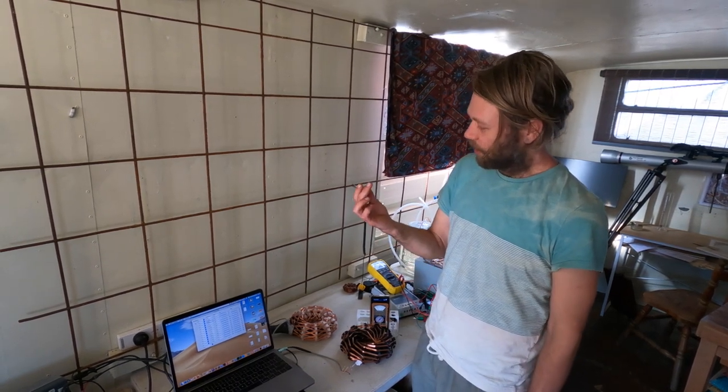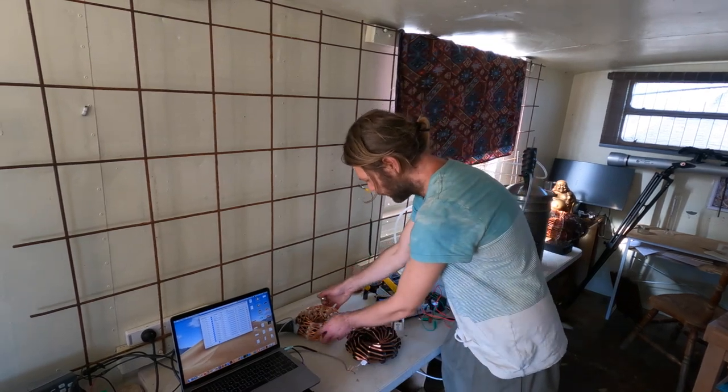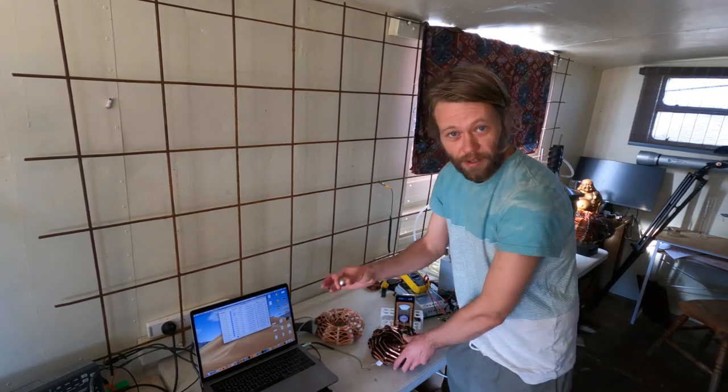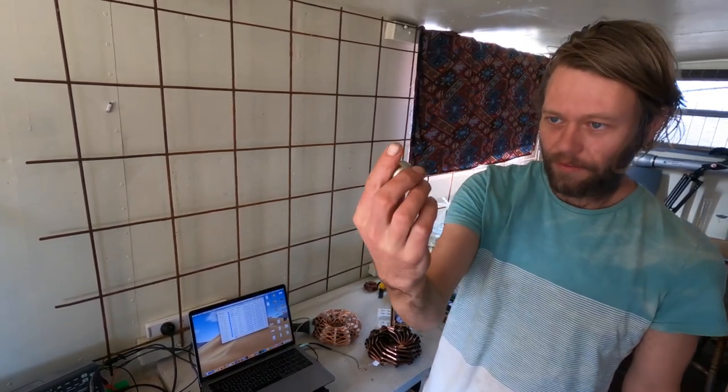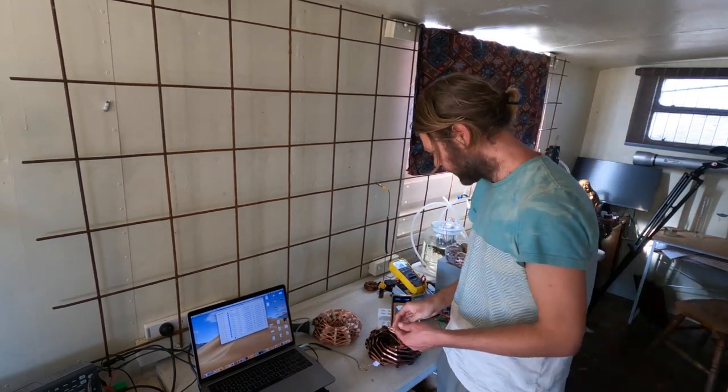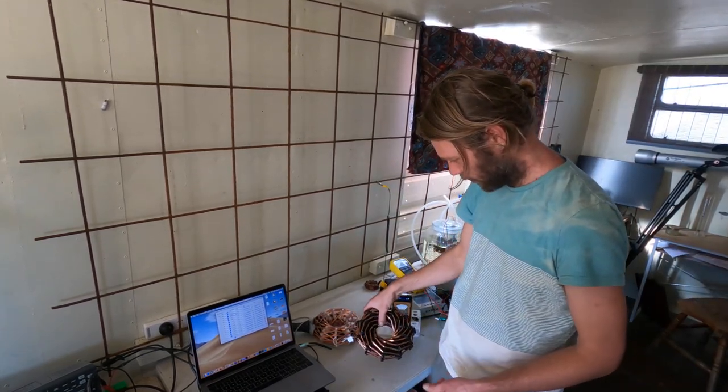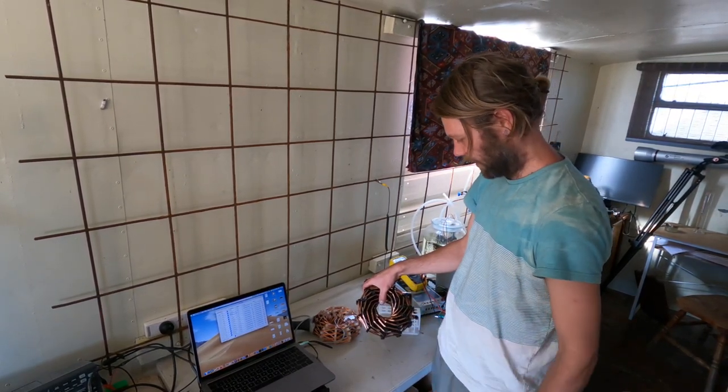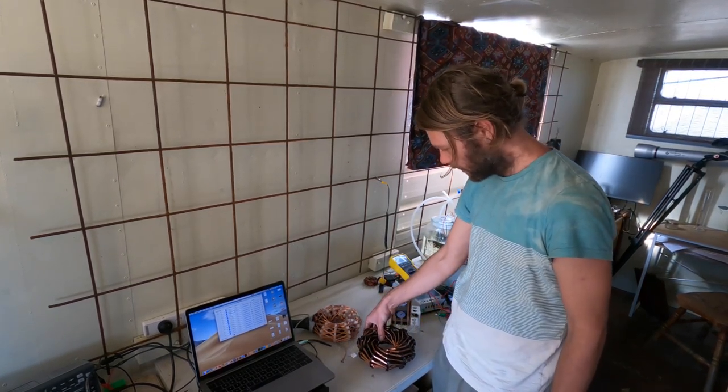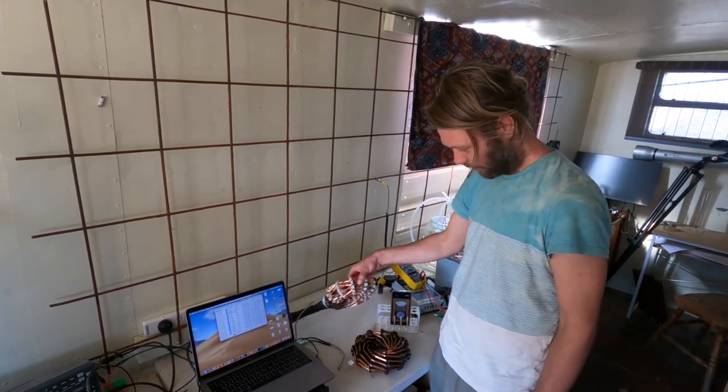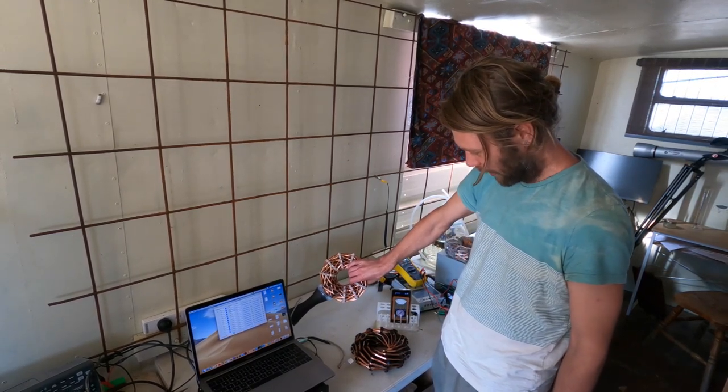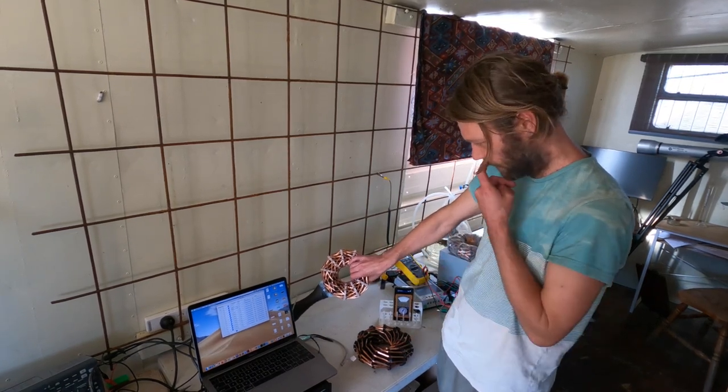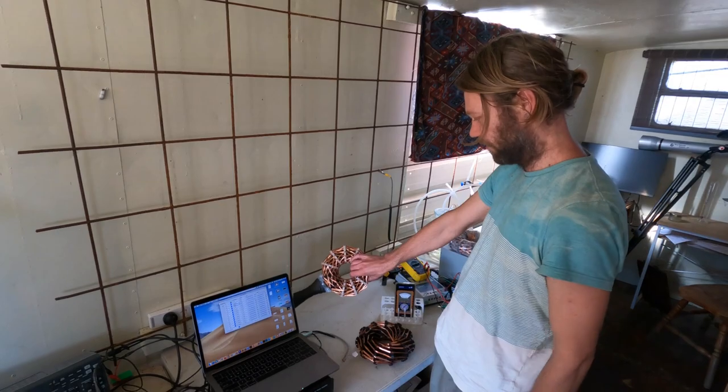In this video we're going to be looking at the effects of these two different rodin coil configurations on a neodymium sphere magnet. With this coil we've got two different channels, both running in a clockwise winding configuration, just to compare with this coil which has two channels but one is in a counterclockwise configuration and one's in a clockwise configuration. This is based on Jamie Buturff's interference coil design.